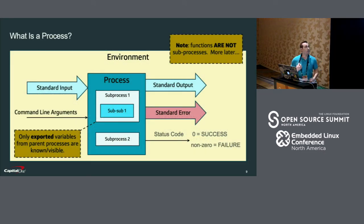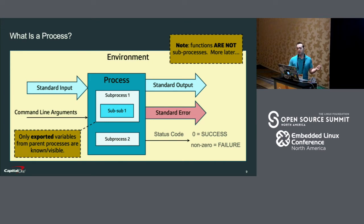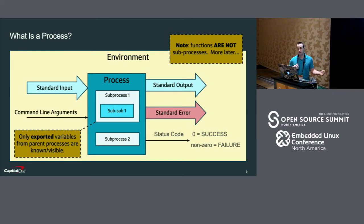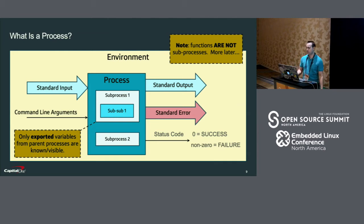To understand the rest of this presentation, you first have to understand what a process is. Processes have streams for input, standard output, and standard error. Processes take arguments, and they produce a status code. The status code is zero for success, and anything else is considered a failure.